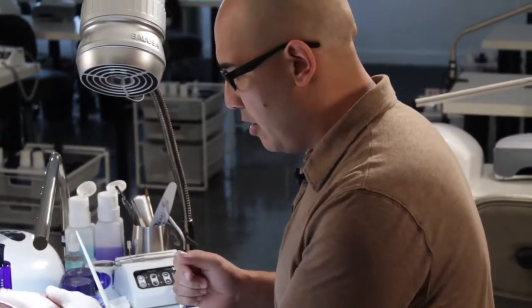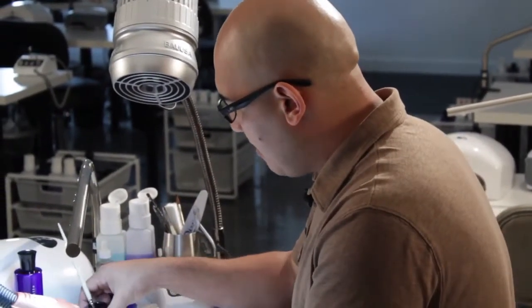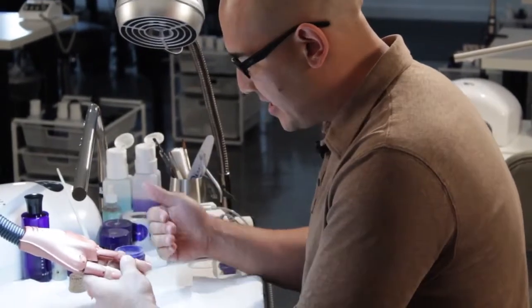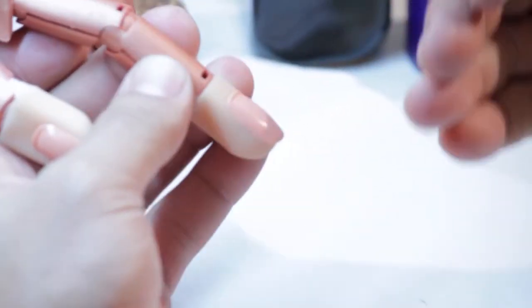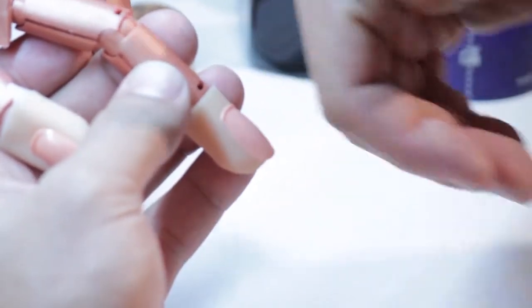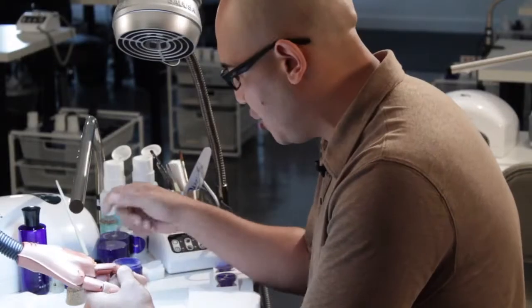Now the key when doing reverse application is getting the right size pearl. What I want to be able to do is keep the finger pointed down towards the towel. This will allow the pearl to drop down in a teardrop formation.